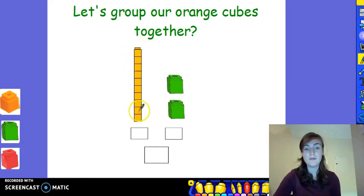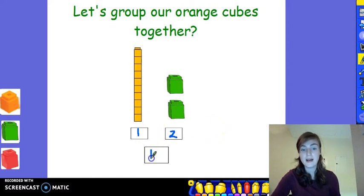And then I have 2 cubes left over by themselves. This is much easier for me to count because I know by looking at my rod that I have 10, 11, 12. I have 1 ten and I have 2 ones left over. I have 12. Well done, you're very good at this.